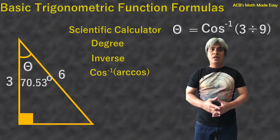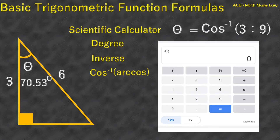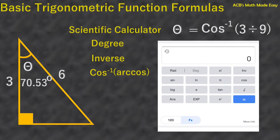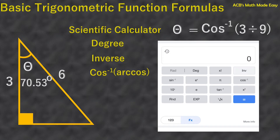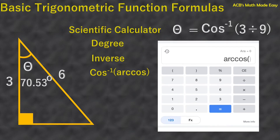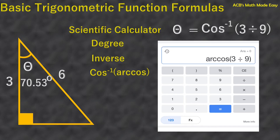I am going to use a scientific calculator from Google. Press the FX button to show the other functions. You can see the degree button — press it. Next step is to press the inverse button, the INV one. You can now press arc cosine, and then press the numbers: press 3 divided by 9. Press the close parenthesis and press equals. You will see that the answer is 70.53 degrees.